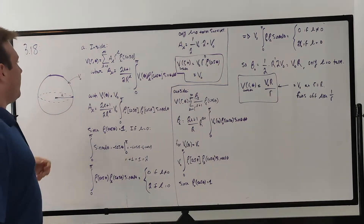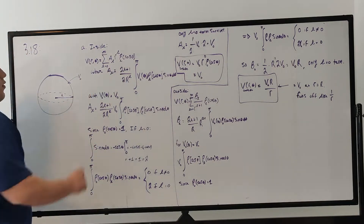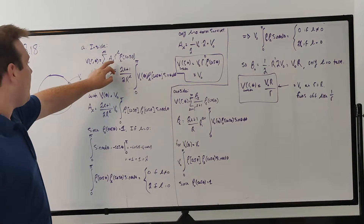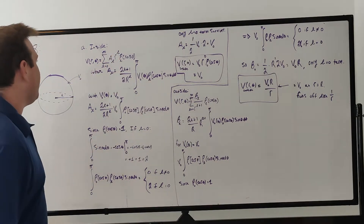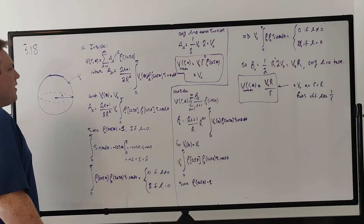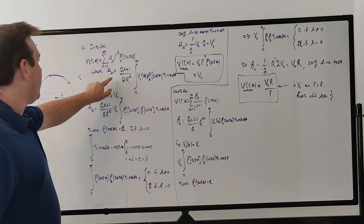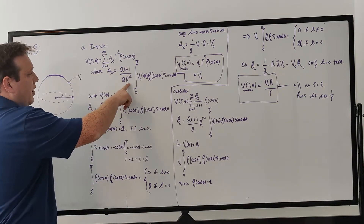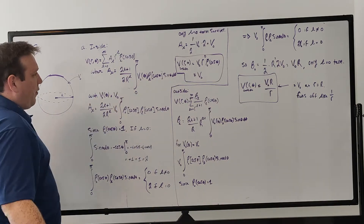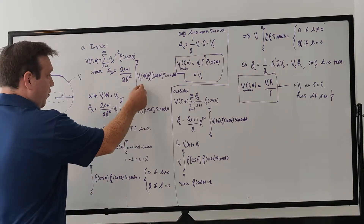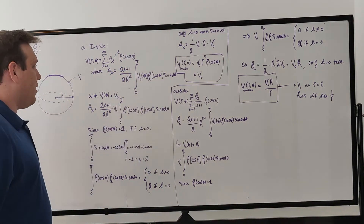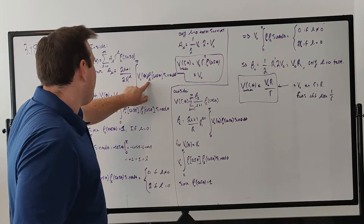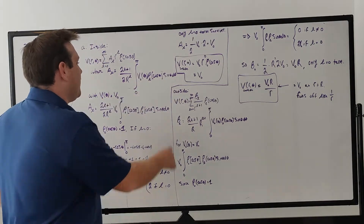For inside the sphere, the general solution for Laplace's equation is that the potential is a sum from L equals zero to infinity of A_L times R to the L times the L-th Legendre polynomial. The coefficient A_L is given by: A_L equals (2L+1)/2 times the radius to the L-th power, times the integral from zero to pi of the potential function V-naught of theta, times the L-th Legendre polynomial in terms of cosine theta, times sine theta d-theta.